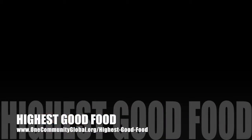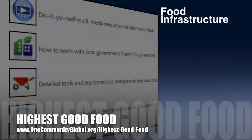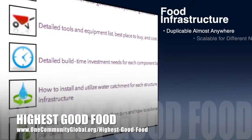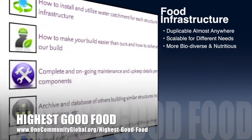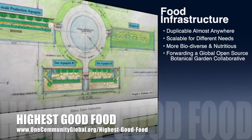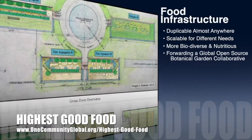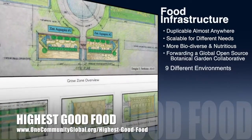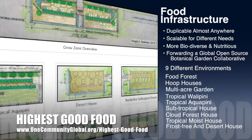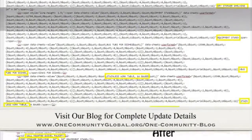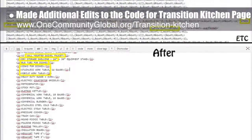One Community's approach to highest good food is duplicable almost anywhere, scalable for different needs, more biodiverse and nutritious, part of forwarding a global open-source botanical garden collaborative, and includes nine different free-shared and duplicable growing environments. This week, the core team made additional edits to the code for the Transition Kitchen page.